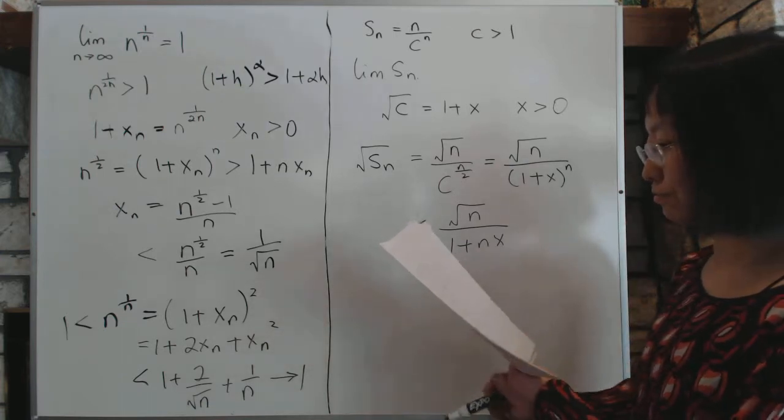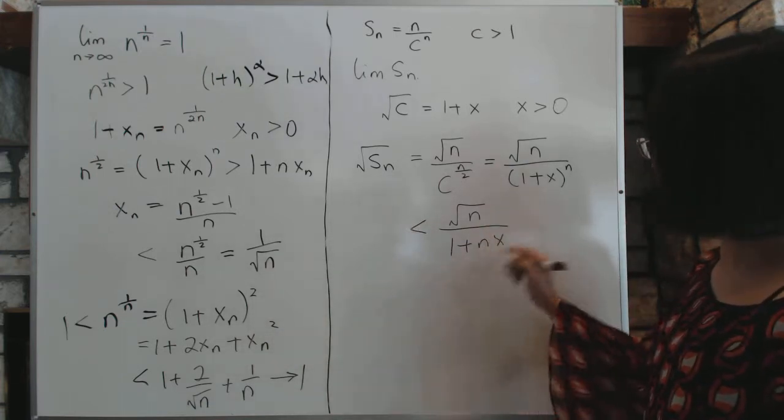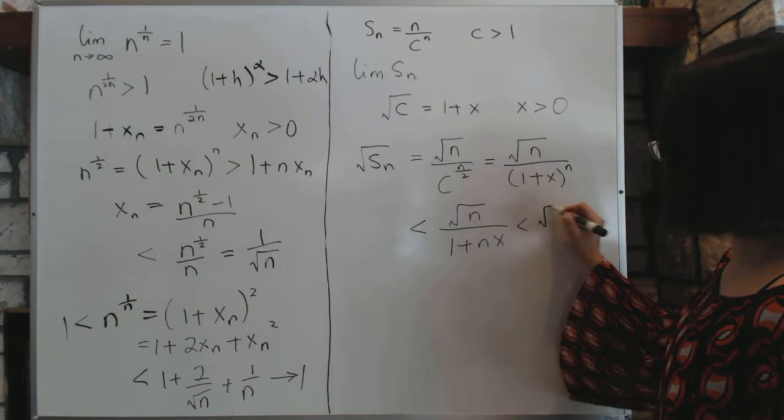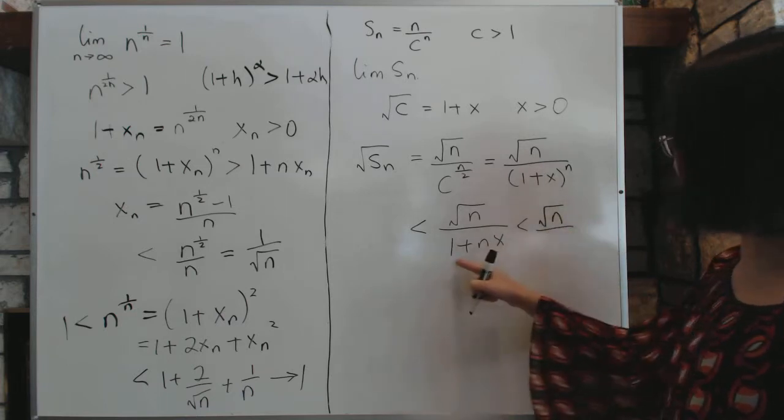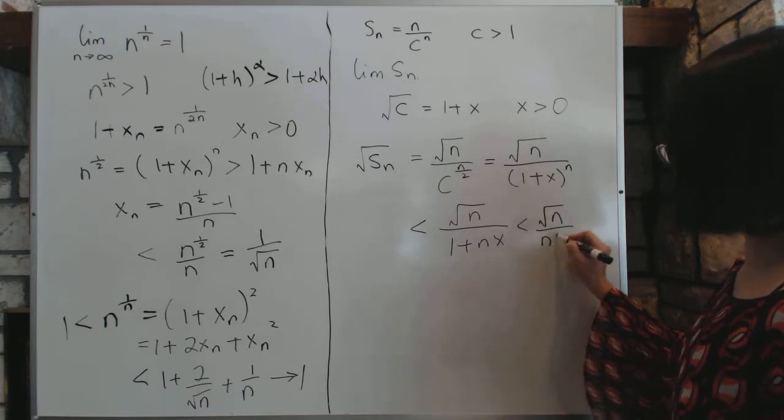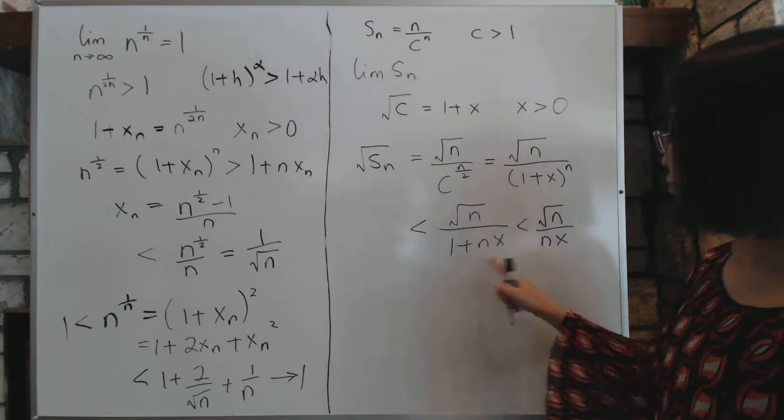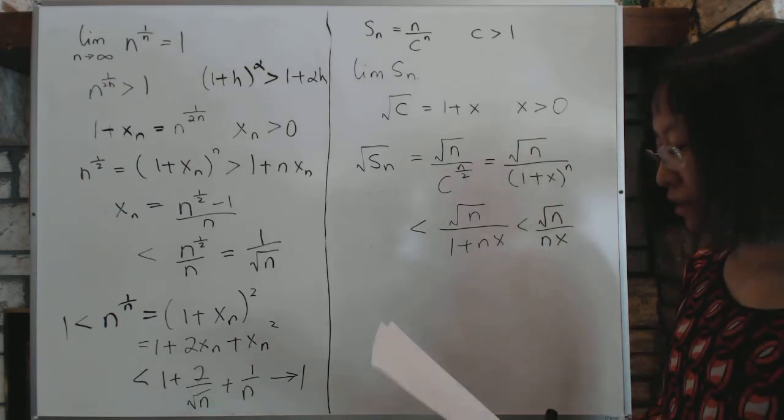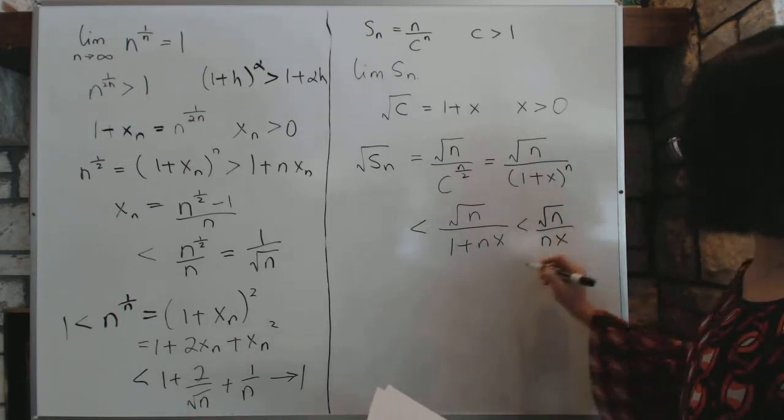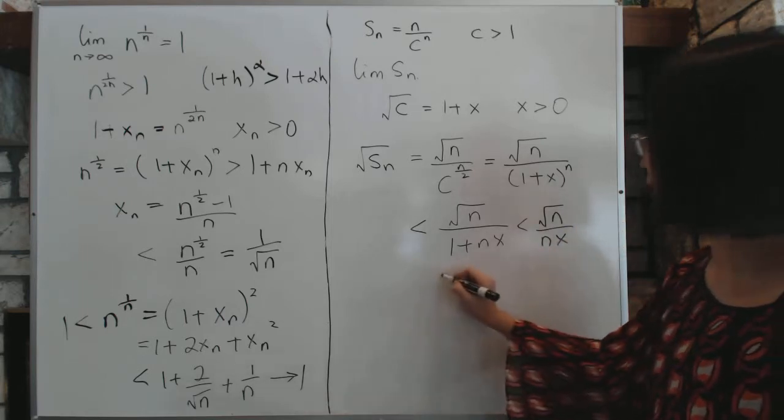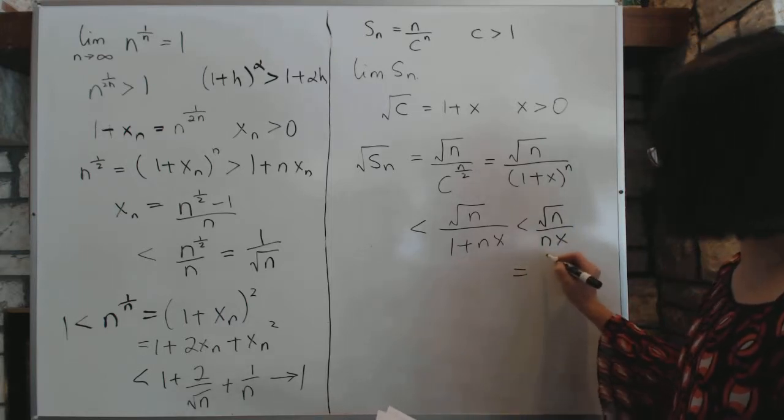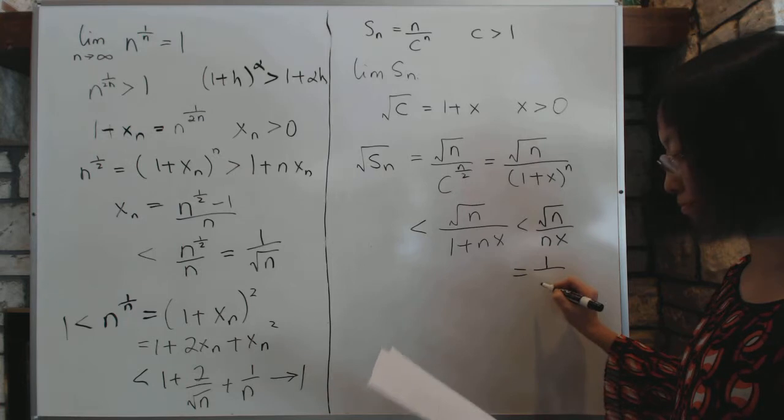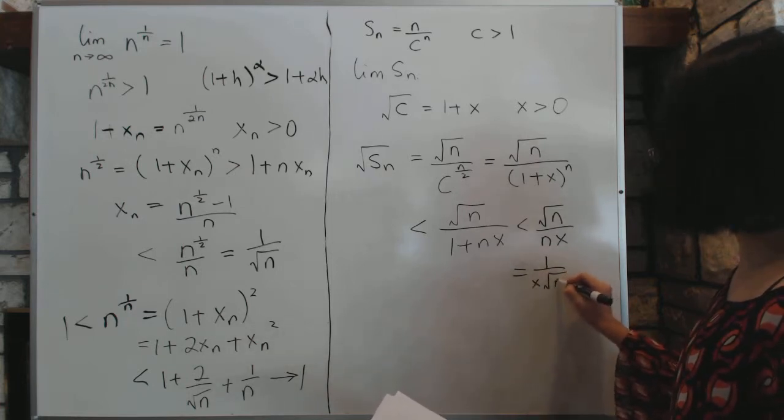So the next thing we're going to do is, if it's less than that, it's also less than this. We'll ditch the 1, and then this thing becomes even bigger because you're reducing the denominator. And this, of course, is equal to, I'll write it here. This thing is simply 1 over x times square root of n.